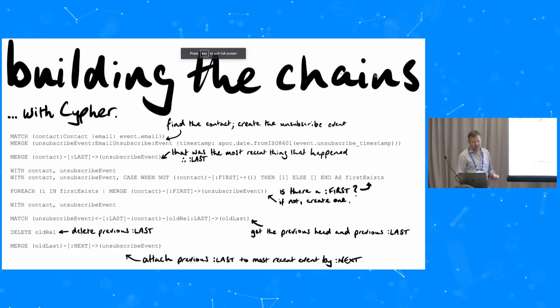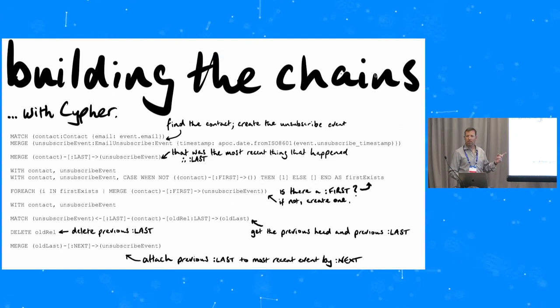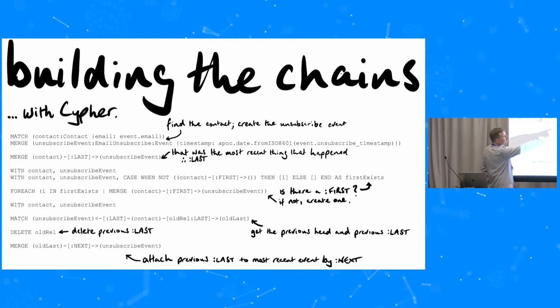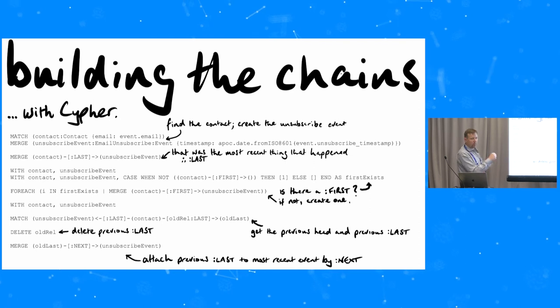So I want to show you the cipher for this. I want to give credit to a friend actually. Mark. Mark Queensland. Hello, lovey. Mark Queensland gave me this pattern. And I think it's something I just use all the time. So in this, obviously I've changed the fiddly details but this pattern. You know, find the contact. Create the unsubscribe event. And then add the last. Remember, it was like making the new last. And then check to see if there's a first. If not, create it. And then delete the old last and then add the next in. So there's a few steps that it's just if you just follow this pattern, it's... I'm sure you'll find a use for this.